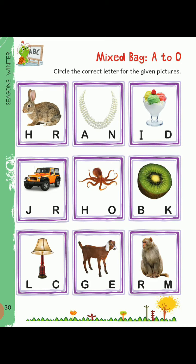Now move to page number 30. Here we have to circle the correct letter for the given picture. Let us check one by one. First is H — hair. So, circle letter H. Next is N — necklace. So, circle letter N.